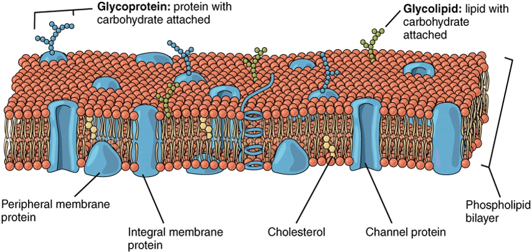The bulk of lipid in a cell membrane provides a fluid matrix for proteins to rotate and laterally diffuse for physiological functioning. Proteins are adapted to the high-membrane fluidity environment of the lipid bilayer with the presence of an annular lipid shell, consisting of lipid molecules bound tightly to the surface of integral membrane proteins.